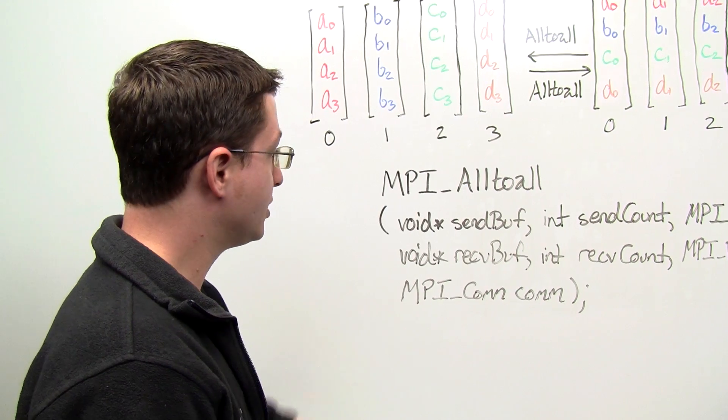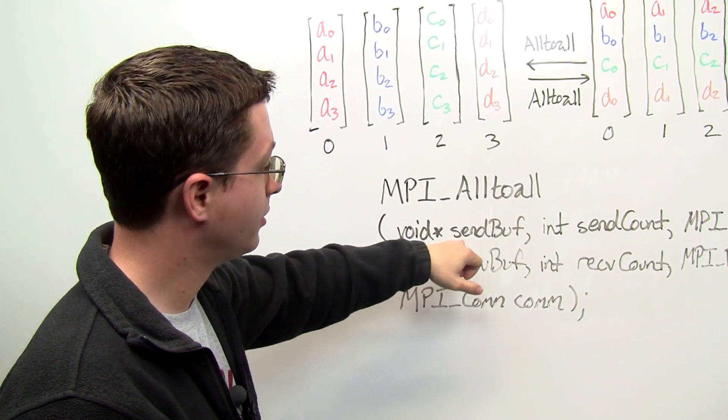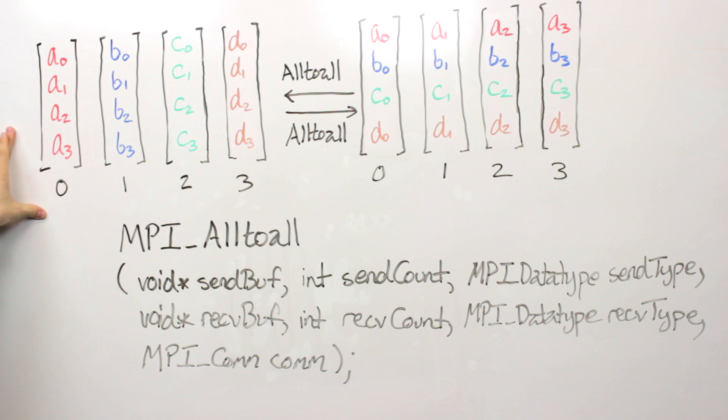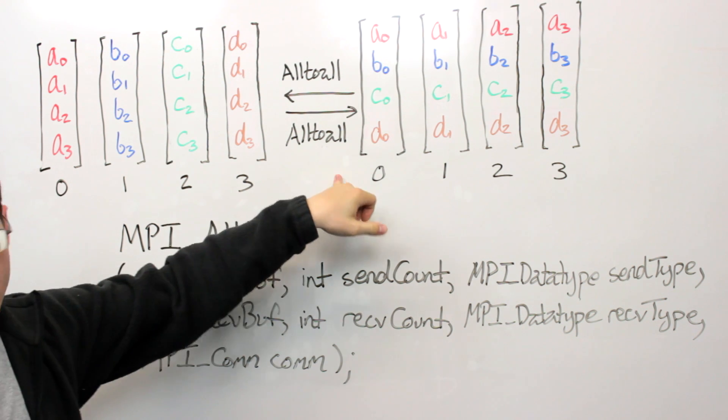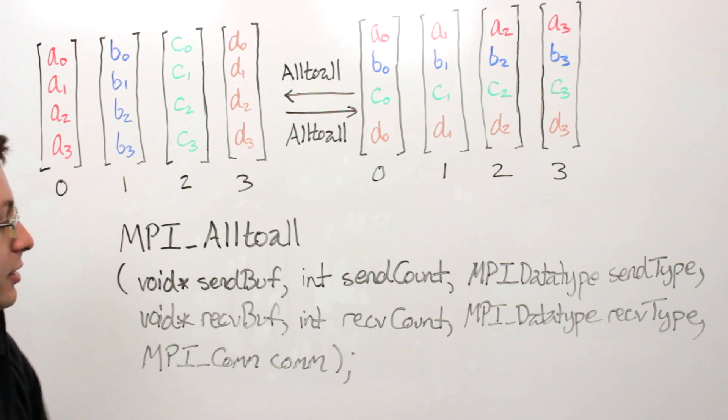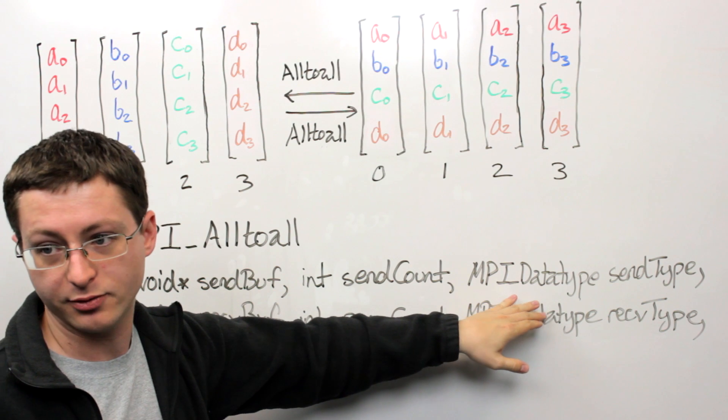So the arguments are fairly straightforward. You have a pointer to the buffer for your input data on each process, and then you have a pointer to your buffer for your received data. So for each of those buffers you need to specify what the send count and the receive count were, and then what the data type was of course.